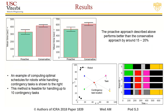Here we compare our proactive approach to the conservative approach and observe that it performs better by around 15 to 20%. We show an example of a mission scenario and its task precedence network and then compute task schedules for each robot while accounting for contingency tasks reported before starting the mission. Our method is feasible for handling up to 10 contingency tasks.